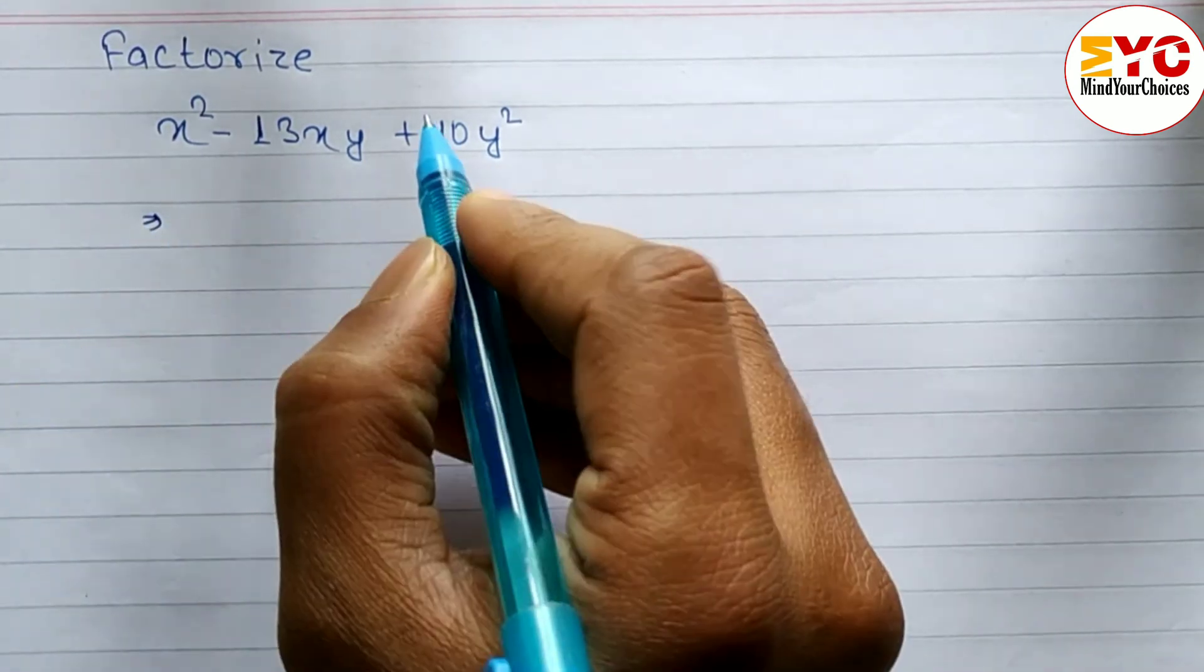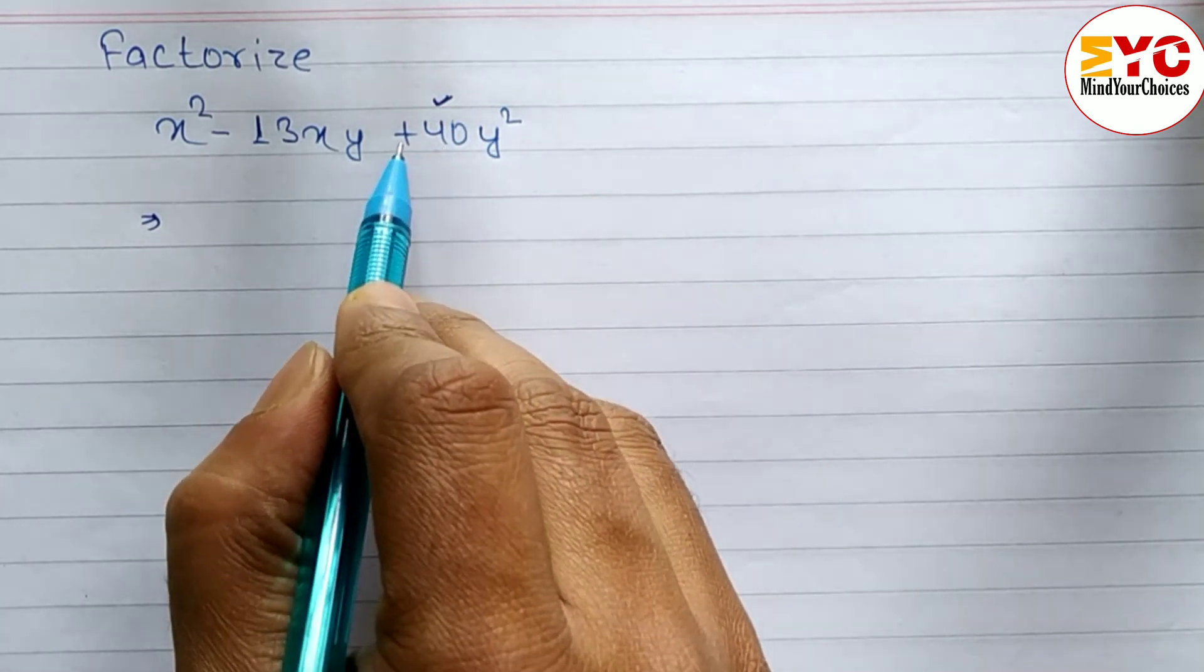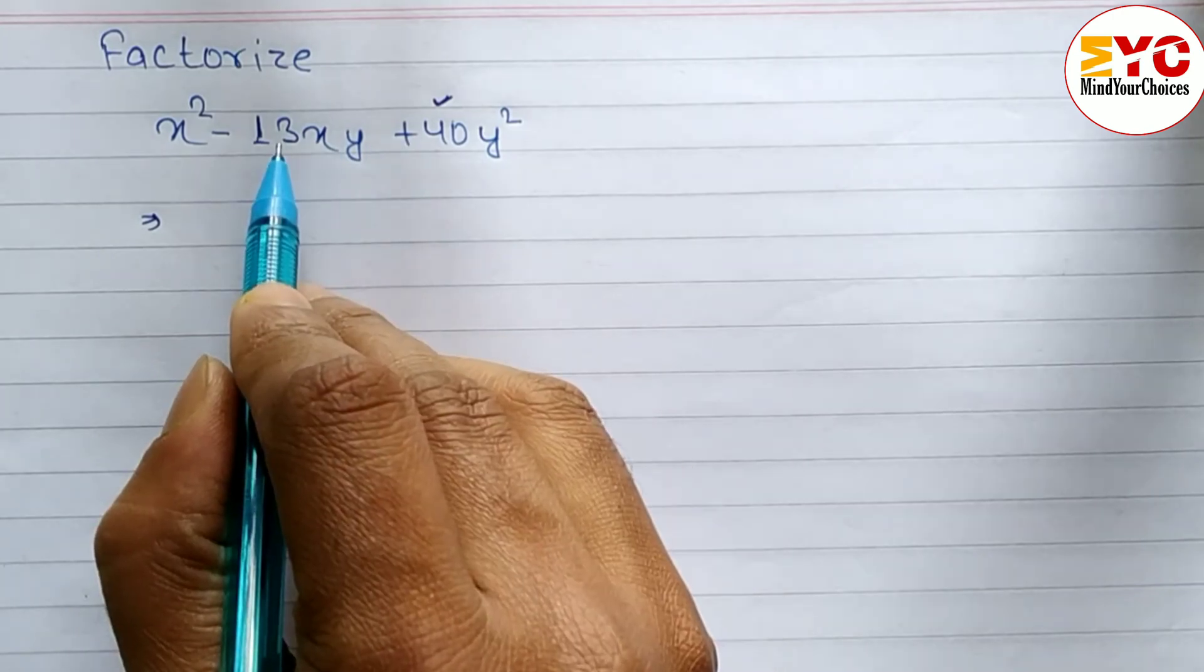First, we have to take this 40 and find two numbers whose multiplication is 40 and addition is 13. Since it's plus here, the addition is 13.